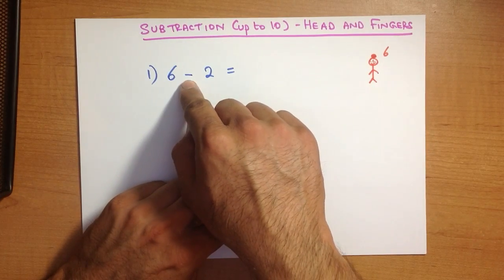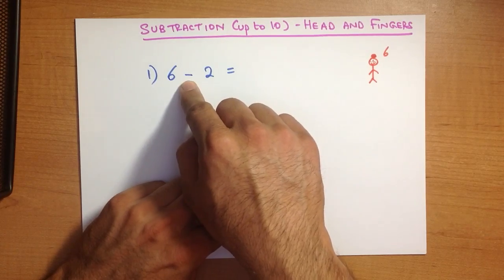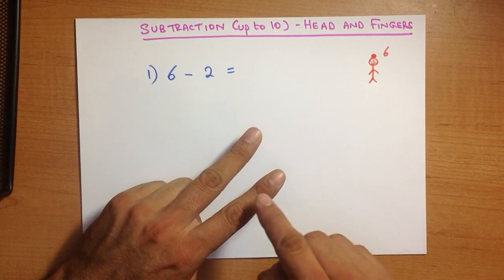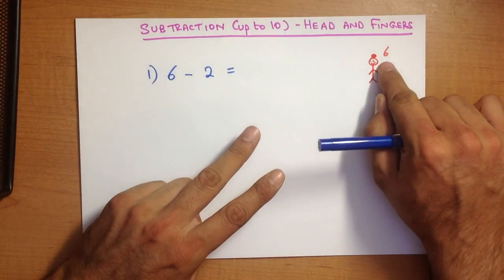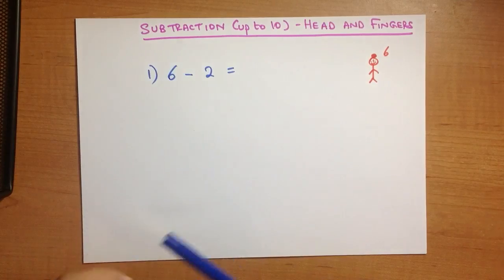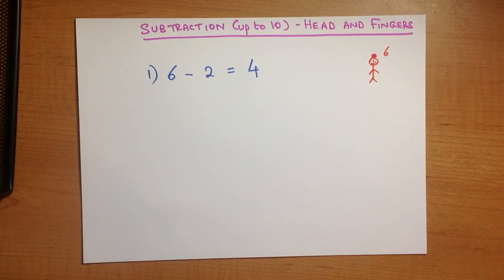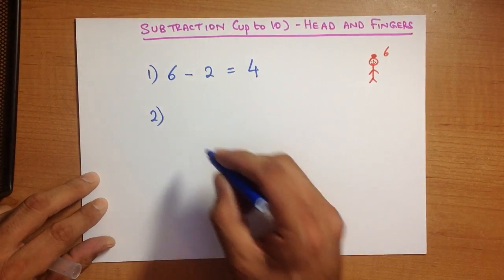We are going to take away or minus or subtract—they all mean the same thing. 6 is on my head: 5, 4. And that is the answer. That was nice and easy, wasn't it? Let's try another one.